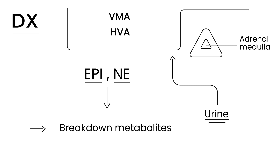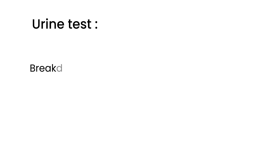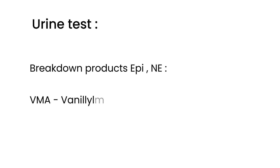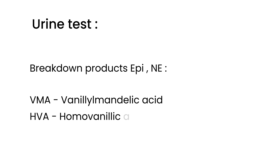The urine test checks for the breakdown products of epinephrine and norepinephrine. The first is called VMA, which stands for Vanillomandelic Acid. The second is called HVA, which is Homovanillic Acid. This is the diagnostic test to check for pheochromocytoma. Because it is a tumor, you will also need to do a CT of the abdomen.